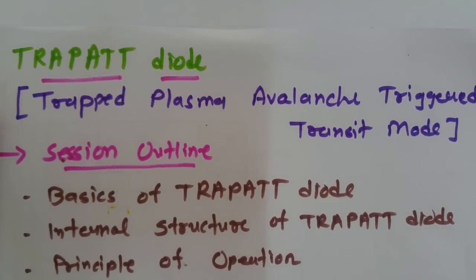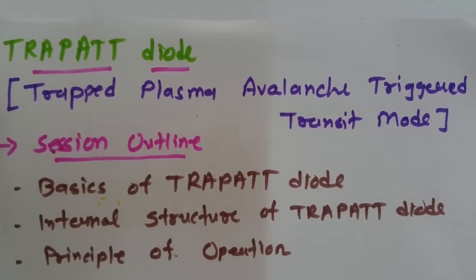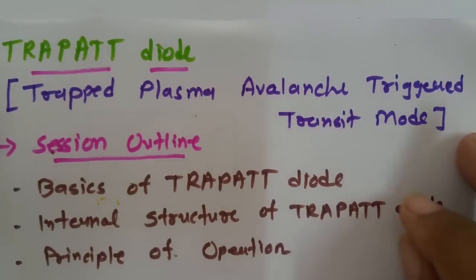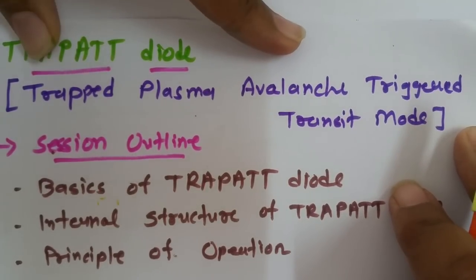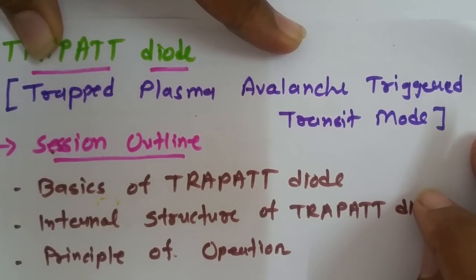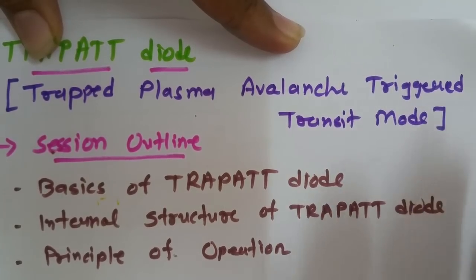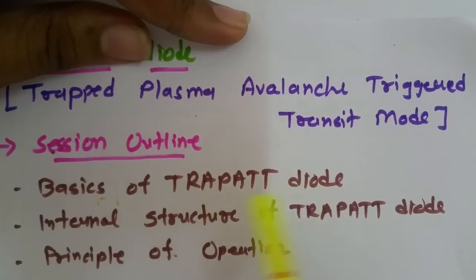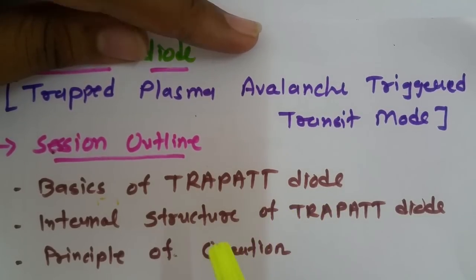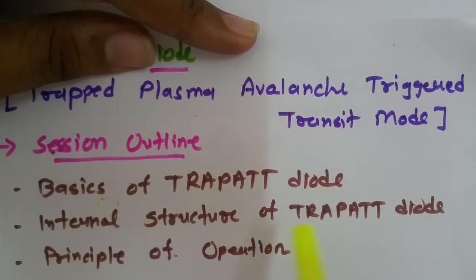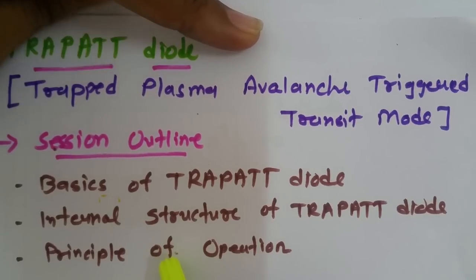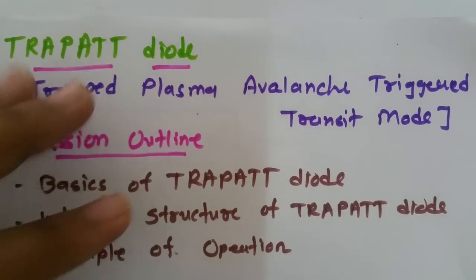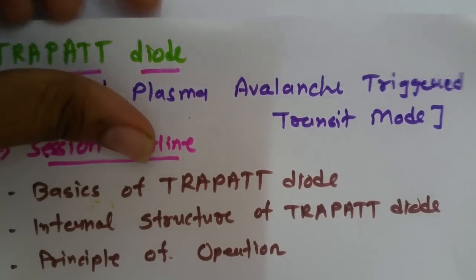In this session I'll be explaining the TRAPATT diode — Trapped Plasma Avalanche Triggered Transit mode diode. In this diode, plasma is delivered and then triggered with plasma avalanche. The session outline covers three main topics: basics of TRAPATT diode, internal structure of TRAPATT diode, and the principle of operation.